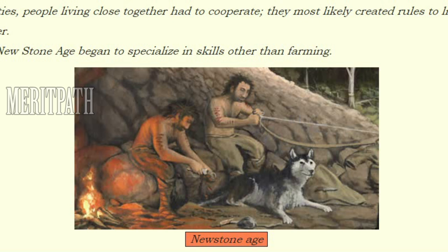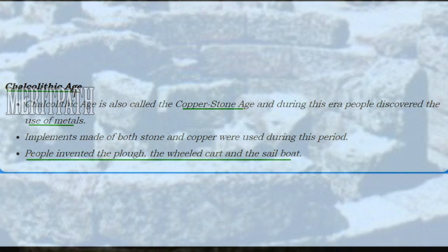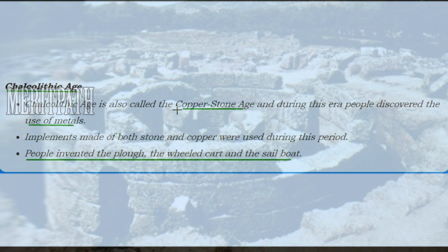The next stage is the Chalcolithic Age, also known as the Copper Stone Age, because the use of metal had started. Weapons were made of both stone and copper. Important inventions of the Chalcolithic Age include the plow, the wheeled cart, and the sailboat.